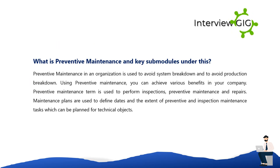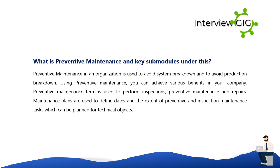What is preventive maintenance and its key sub-modules? Preventive maintenance in an organization is used to avoid system breakdown and production breakdown. Using preventive maintenance, you can achieve various benefits; the term covers inspections, preventive maintenance, and repairs. Maintenance plans are used to define dates and the extent of preventive and inspection maintenance tasks, which can be planned for technical objects.